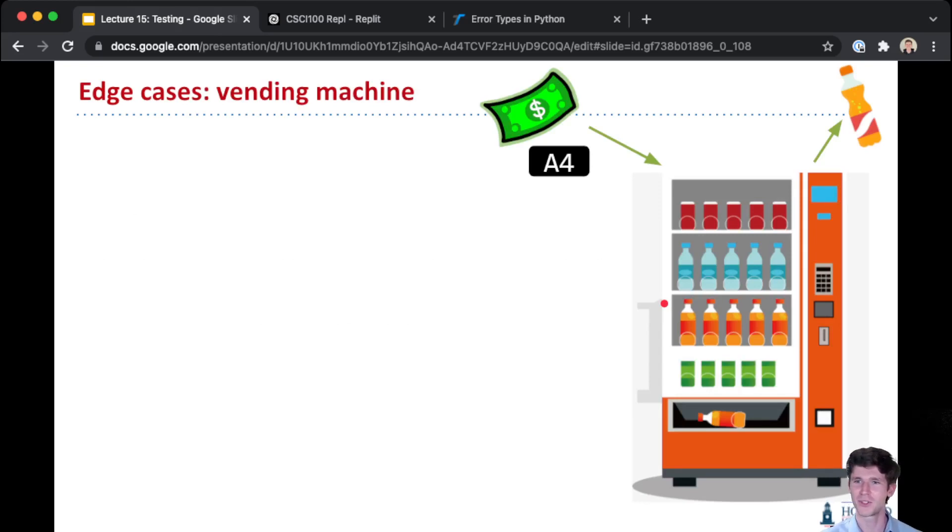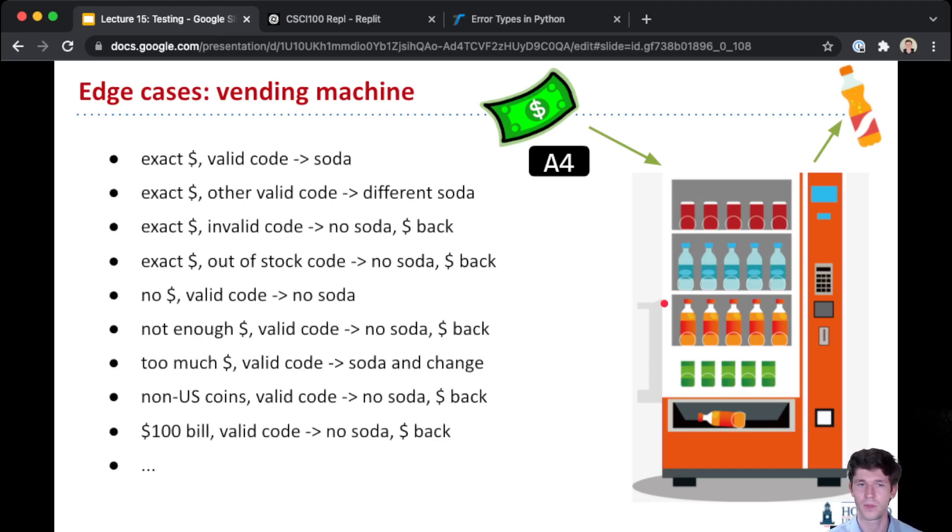So going back to this vending machine, it actually has a lot of different edge cases that we can think of. For example, consider giving the exact amount of money with a valid code—that's all common. But when you're testing, you also want to think about inputs that might break your machine. So for example, what if you give an invalid code? What does your machine do? It should give back the money, right? It should handle that kind of error gracefully.